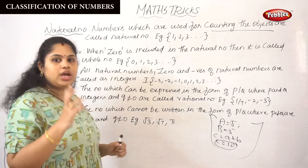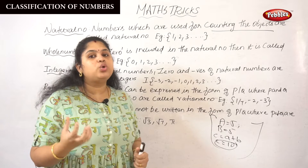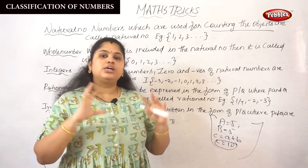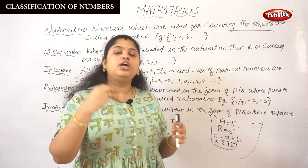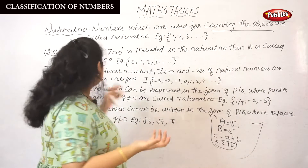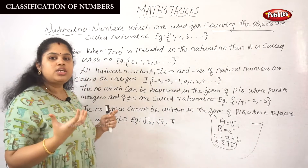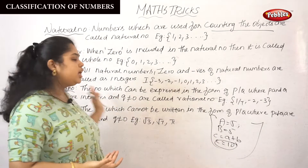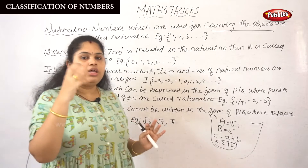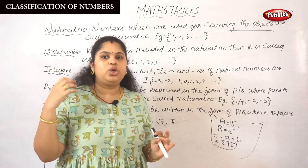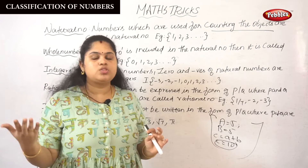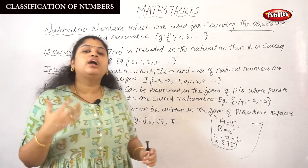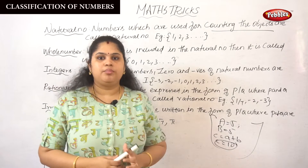So to recap: natural number means the number used to count objects. Whole number is a collection of every number including 0. Integer includes zeros and negatives of natural numbers. Rational number is expressed as P/Q where Q is not equal to 0, and irrational number is exactly opposite to the rational number.